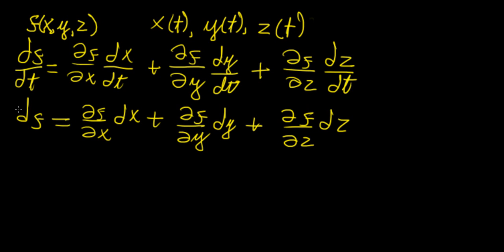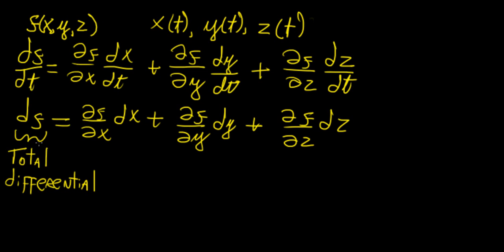So why do we want to write it in this way? Well, this is what we call a total differential. In essence, what this represents is a quantity that tells us on average by how much this function is changing with respect to changes in each of those three variables individually. So what we're doing is adding up the contributions of a change in x, y, and z, and taking the net change in all three variables — that gives us some way of quantifying by how much f is changing with respect to those little changes in x, y, and z.